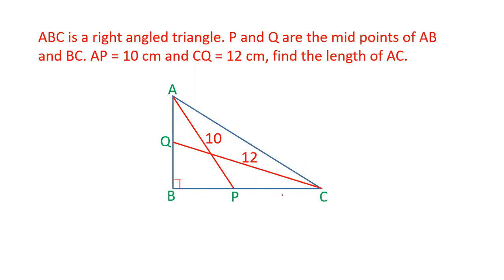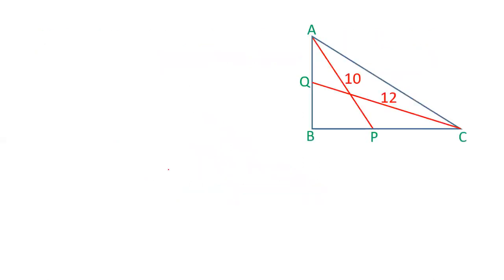The question given is ABC is a right angle triangle, right angle at B. P is the midpoint of BC, Q is the midpoint of AB. AP is given as 10 centimeters, CQ is given as 12 centimeters, and we have to find out the length of AC. Let's see how we can solve this question.